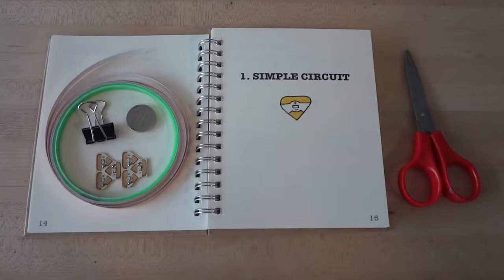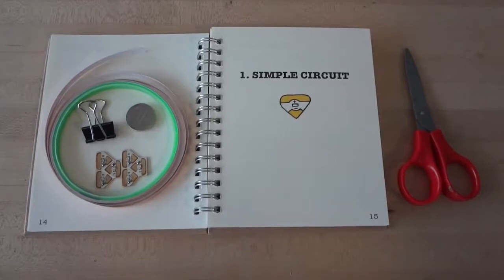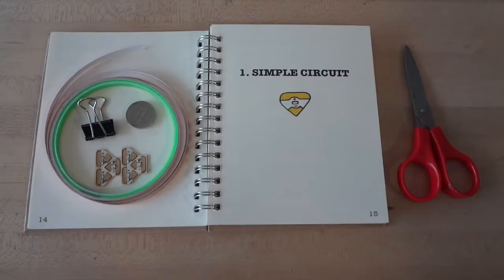In this tutorial, you will need one LED sticker, one coin cell battery, a binder clip, copper foil tape, and scissors to cut your tape.